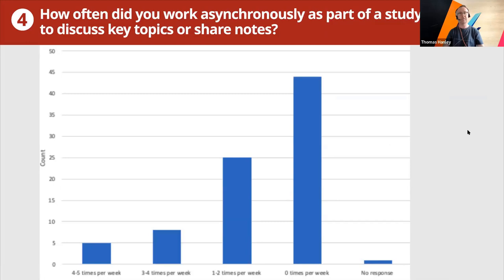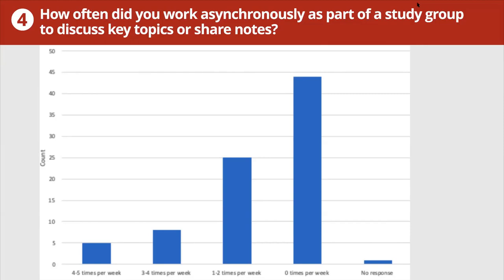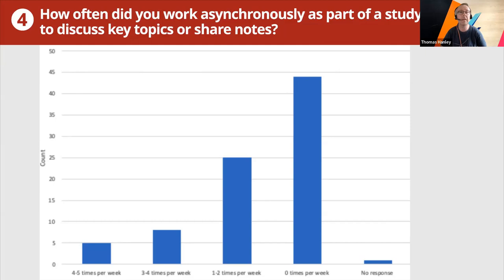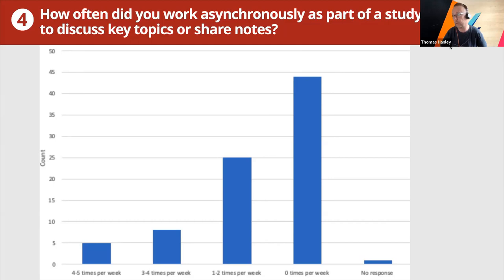On informal group working — working together as a group not just on designed activities but in a more open, informal way — zero times a week was by far the biggest response; students didn't do this. It's quite a difficult thing to do, and obviously this was taking place during emergency remote teaching with a pandemic going on. So there were some instances of high engagement, but by and large it was one to two times a week or not at all.